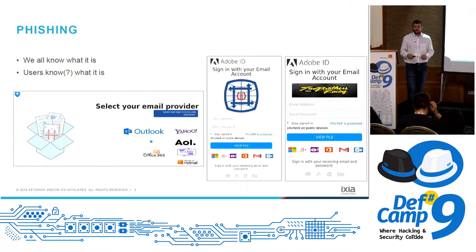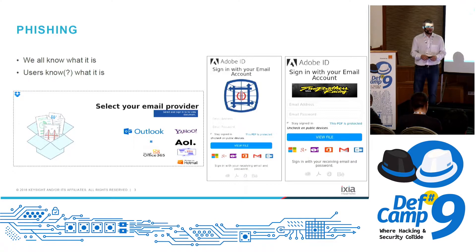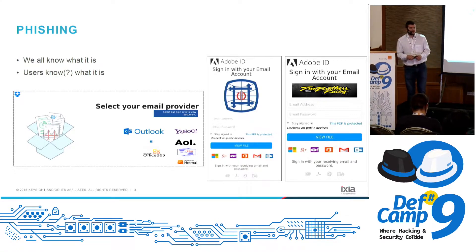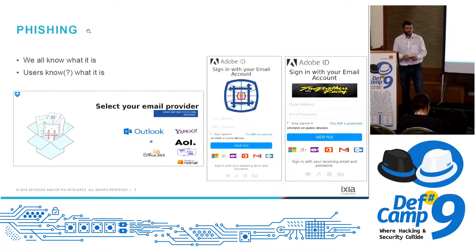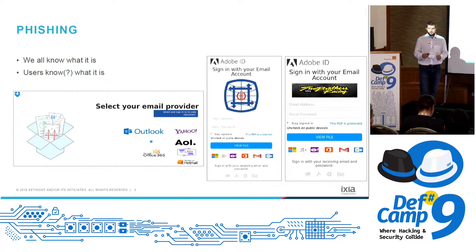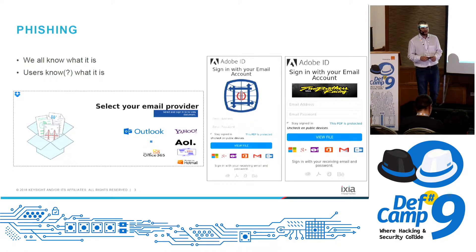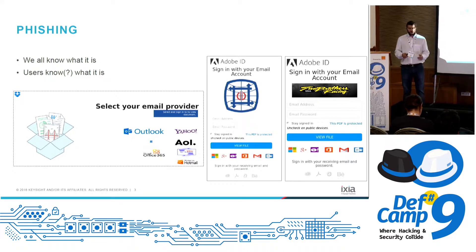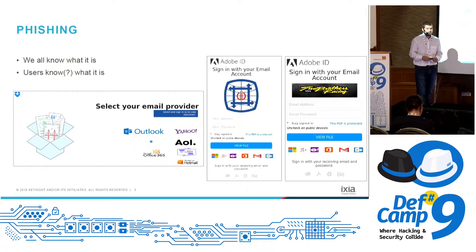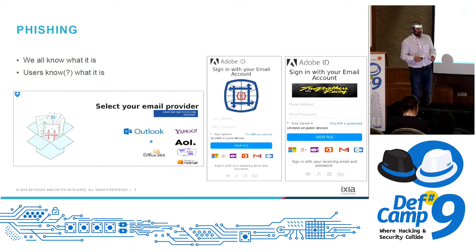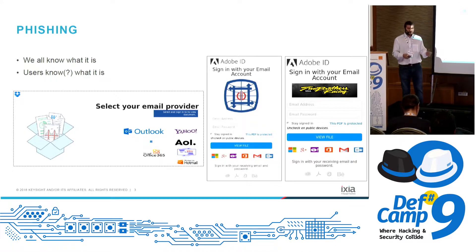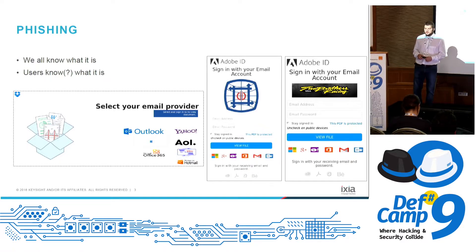I assume everyone in this room knows what phishing is. We also tend to assume our users know what phishing is — everyone has to go through regular corporate trainings, awareness campaigns and stuff like that. I'd just like to talk about the definition of phishing to underline a couple of important points. What someone who does phishing tries, using a web page, is to gain the user's trust so that they will reveal some sort of important information. The best way to do that is to use graphical markings and stuff like that.